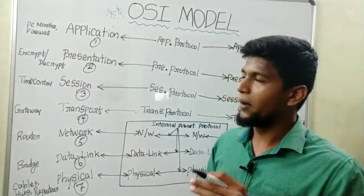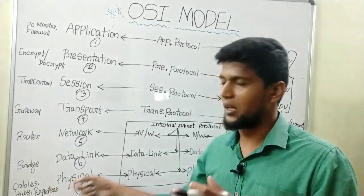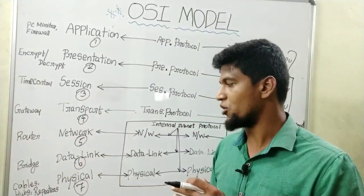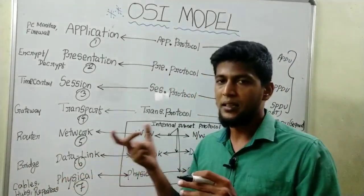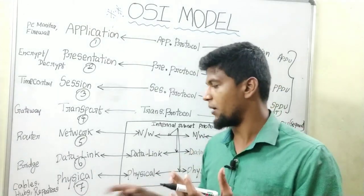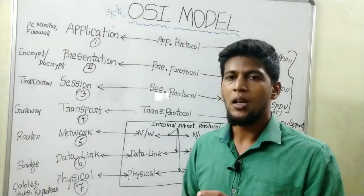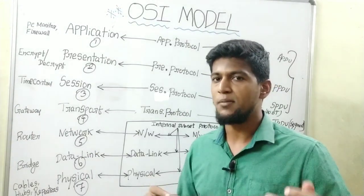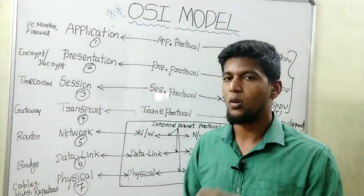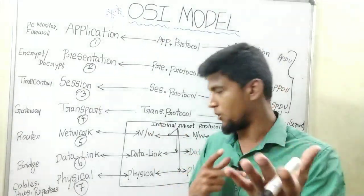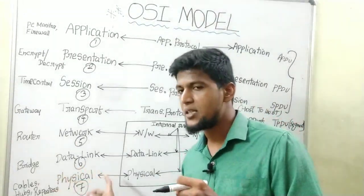The application layer is used in a particular layer, and a particular device is used in a particular layer. What is the physical layer? The hardware part of the physical layer — the cables are connected to the physical part, the cables are connected to the hub.